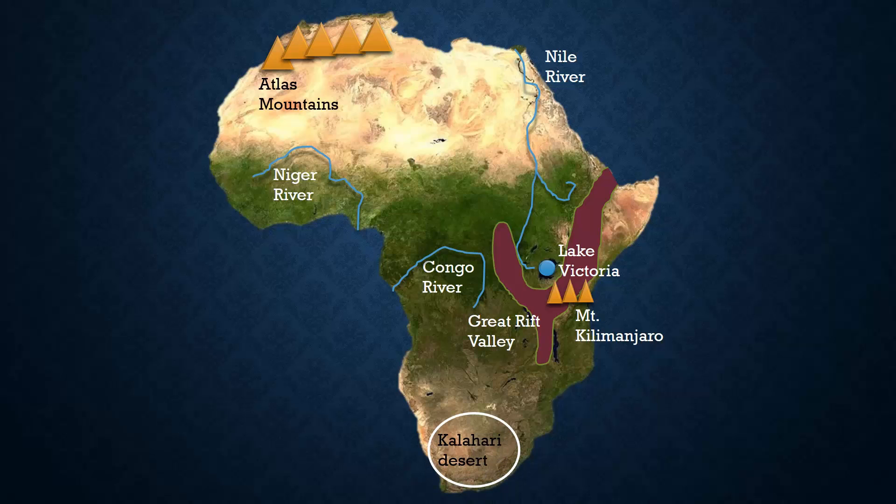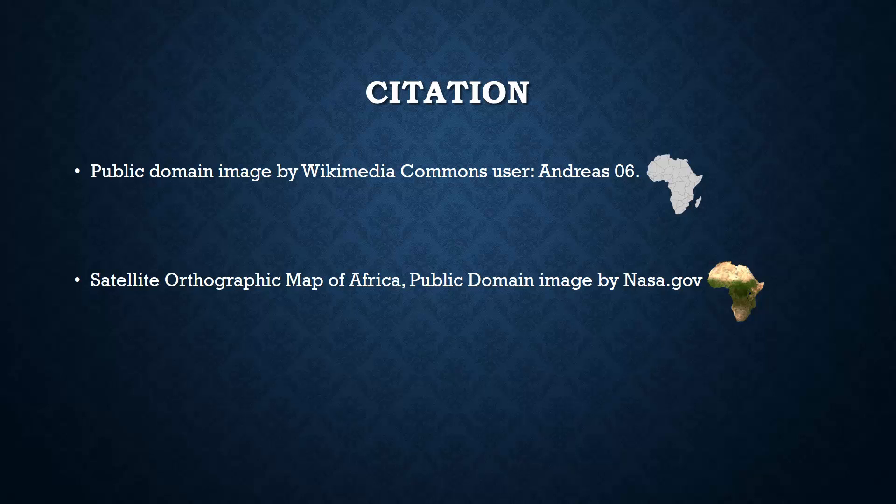The following physical feature is the Kalahari Desert. It is located towards the south of Africa. That concludes our map of Africa. Thank you for watching.